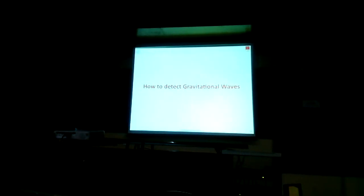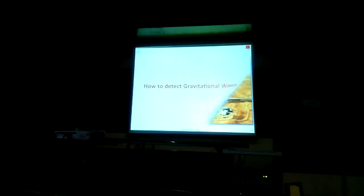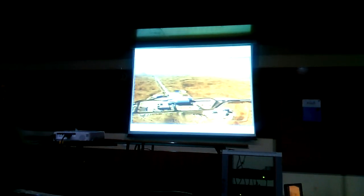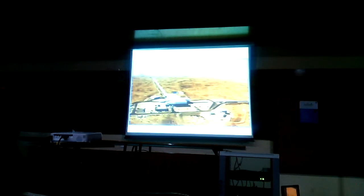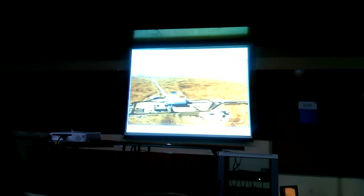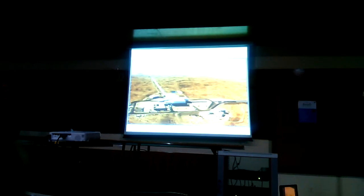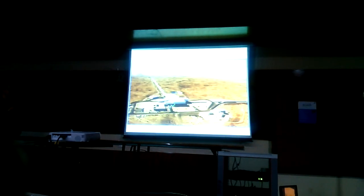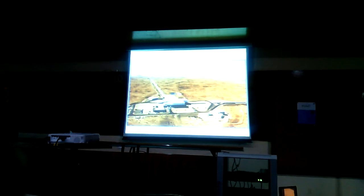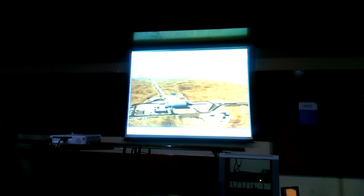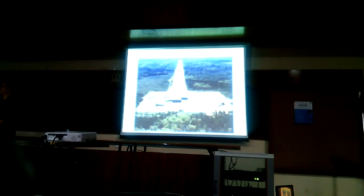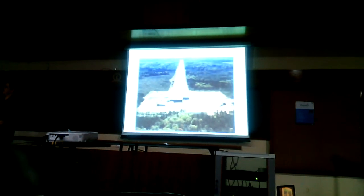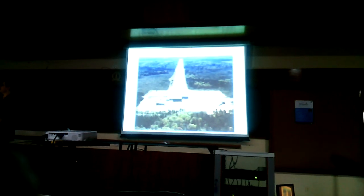We know gravitational waves exist because their effects are seen in that system. Now, how do we detect them directly? Let me show you the current generation of gravitational wave detectors. This is one of the Laser Interferometer Gravitational-Wave Observatory detectors in the United States — the acronym is LIGO. This one is located northwest of the United States near the Hanford nuclear reservation. There's a central building and two arms each four kilometers long, enclosing long vacuum tubes inside a concrete shell. The second LIGO detector is in Louisiana, about 3,000 kilometers away — it takes light 10 milliseconds to travel from one instrument to the other.